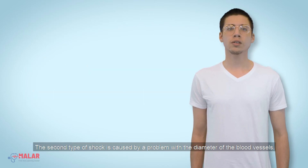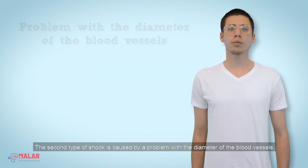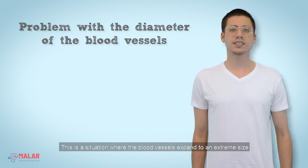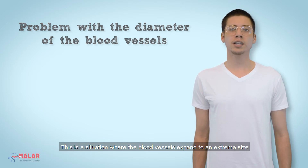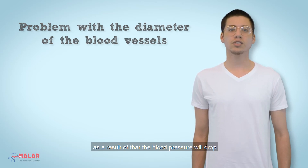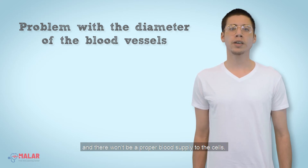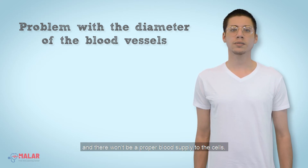The second type of shock is caused by a problem with the diameter of the blood vessels. This is a situation where the blood vessels expand to an extreme size, causing blood pressure to drop and resulting in no proper blood supply to the cells.